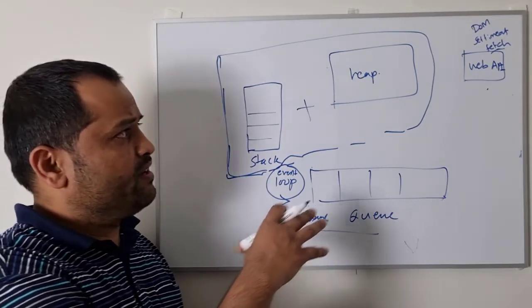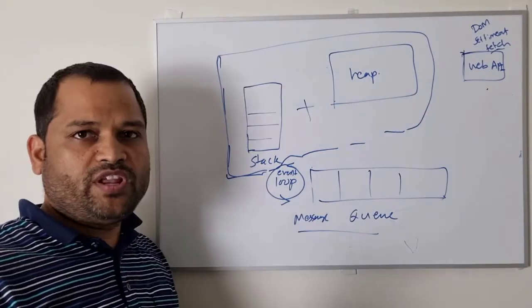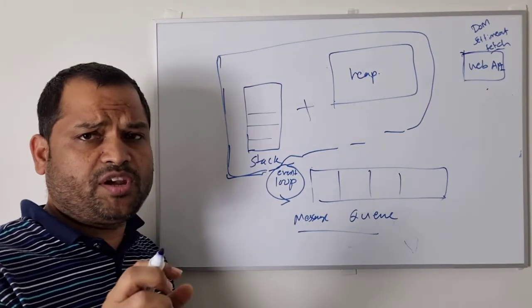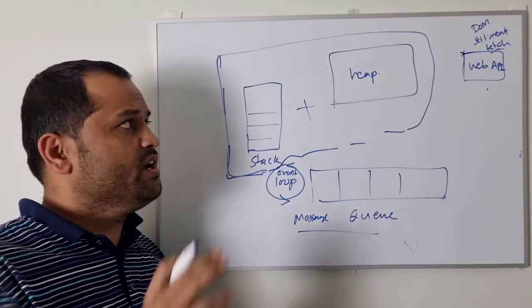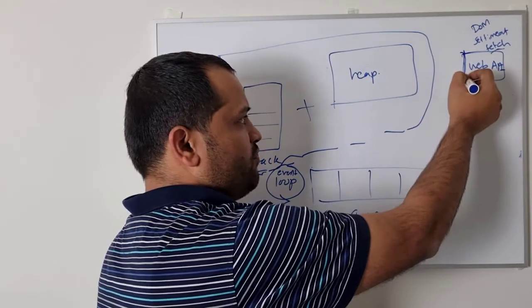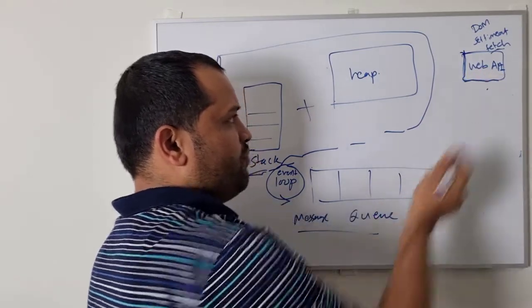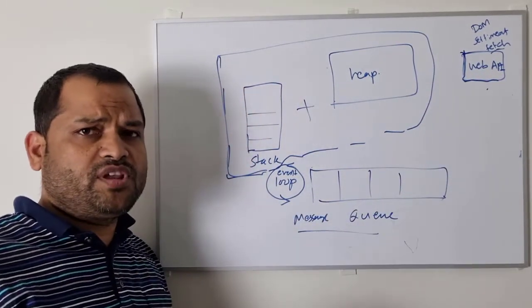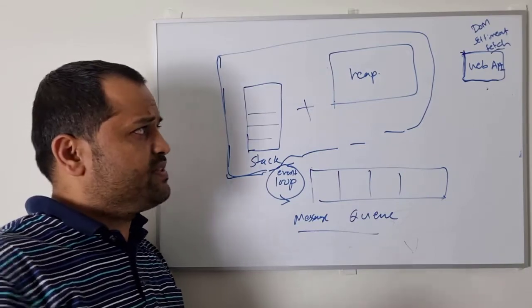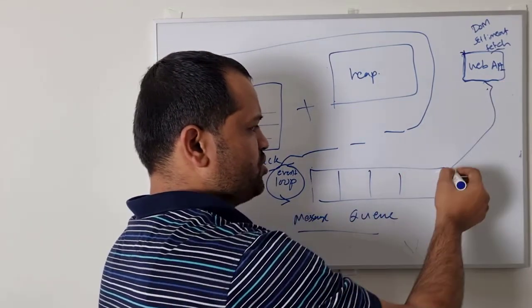And that is why we need this Web APIs, message queue and event loop. So whenever JavaScript engine sees this fetch statement, it delegates that particular call to Web API. So what Web API does is that it waits until the server is responding. As soon as the server responds, it puts the message into this message queue.